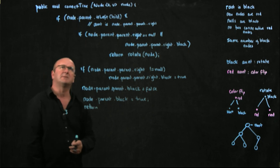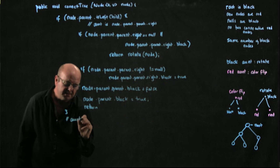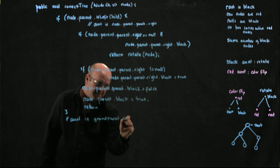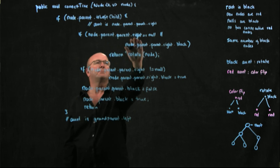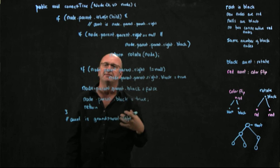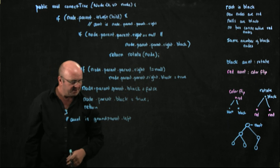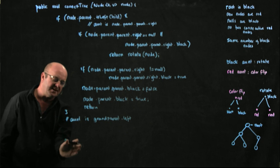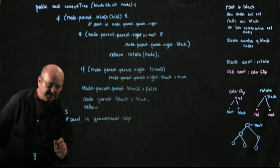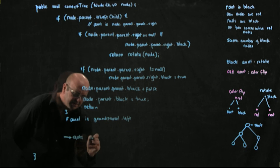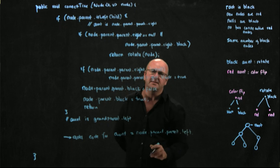We don't need an else statement because we've fully handled the left-child case. Now we handle the right-child case, where the aunt is the grandparent's left child — node.parent.parent.left. We use exactly the same code as before, just swapping left and right throughout. That completes our correctTree method.